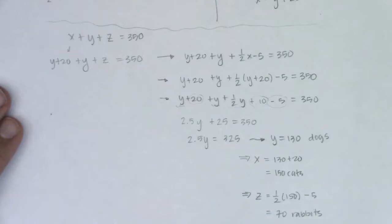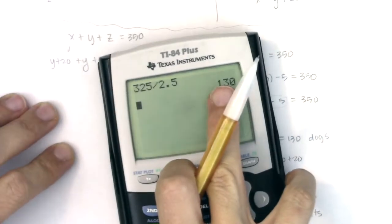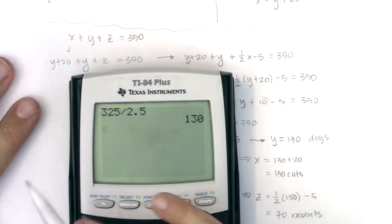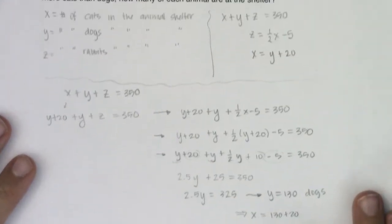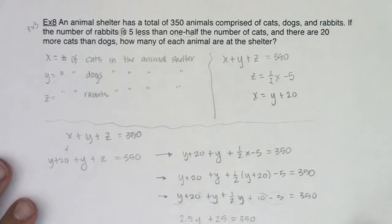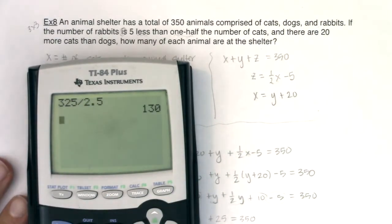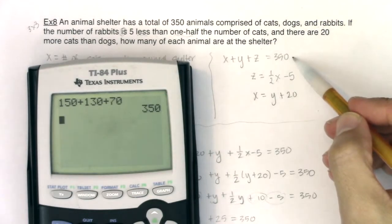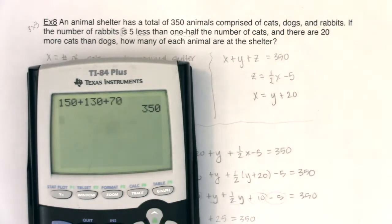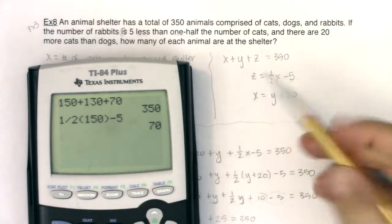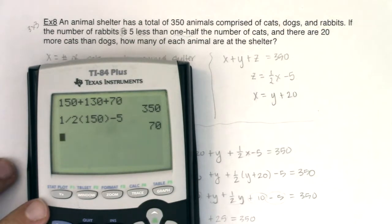Now I've solved for all of my animals. Let's check and make sure our equations are working. It's always good to go back to the original equations and check your work at the end. Was it true that x plus y plus z equals 350? For x we had 150 cats, for y we had 130 dogs, and for z we had 70 rabbits. Yep, that equals 350. Is it true that z equals one-half x minus 5? One-half of our cats and subtract 5, and sure enough that's 70. And let's check y plus 20. If I take y, which is 130 dogs, and add 20, I get 150 cats.